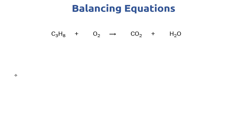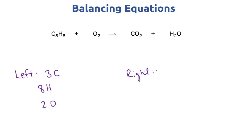On the left side we have three carbons, eight hydrogens, and two oxygens. On the right side we have one carbon, two hydrogens, and three oxygens. So none of these elements are balanced at this point.